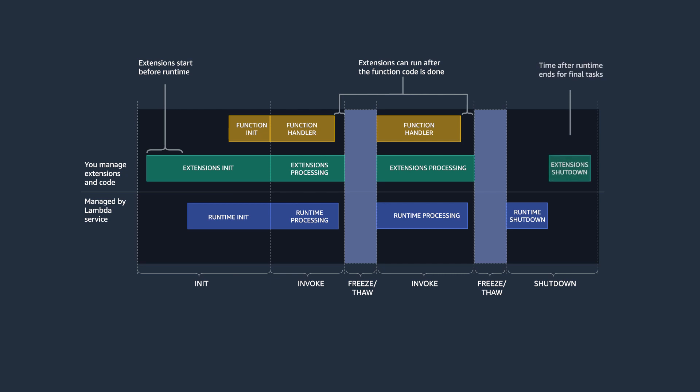Finally, extensions can run during a shutdown phase, which occurs before the environment is spun down. They can use this time for final cleanup tasks. Note that because extensions run in the same environment as the function code, they share resources such as memory, CPU, and credentials with the runtime process.